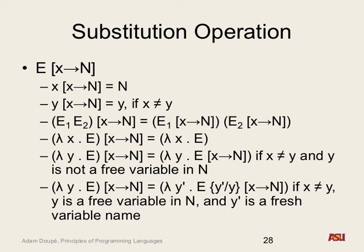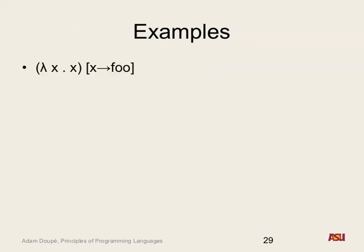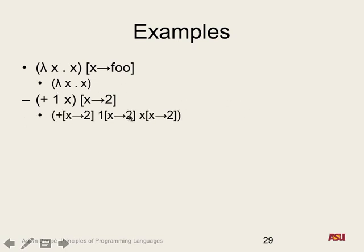This is the key behind actually doing function applications — the core crux of the operator. Let's look through some examples. If we have lambda x dot x and we want to replace x with foo, what's the result? Lambda x dot x — because x is the same as the meta variable, which means we're not going to go into that expression. For plus one x replacing x with two, we would distribute the operator to plus, the one, and the x, and then the x would be replaced with two.